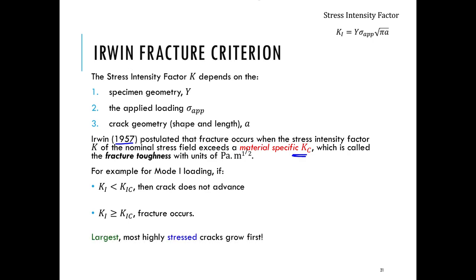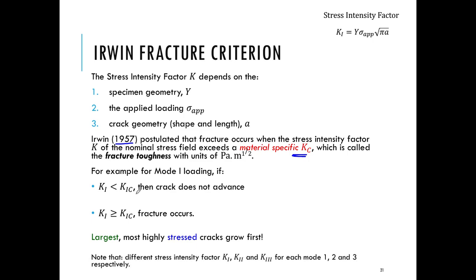The stress intensity factor K₁ increases with higher stress and with a longer crack — the longest crack under the highest stress will be the one that causes failure. This discussion has been for Mode 1, which is why we have K₁ and K₁_c, but the same argument applies analogously for Mode 2 and Mode 3, where the stress intensity factors are then known as K₂ and K₃.